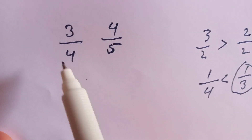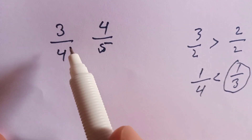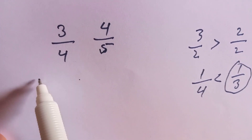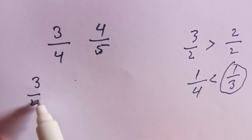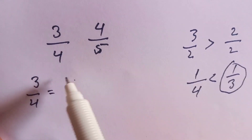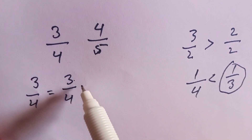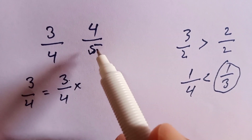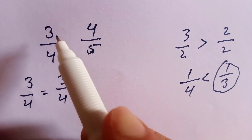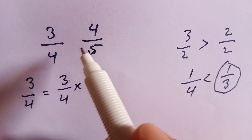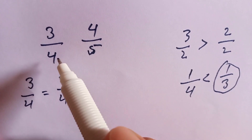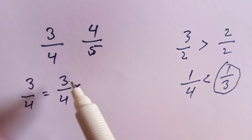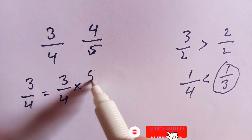We will make equivalent fractions of these two fractions. We write 3 over 4 equals 3 over 4 times 1. We multiply and divide by 5 with 3 over 4, and multiply and divide by 4 with 4 over 5. So 3 over 4 times 5 over 5.